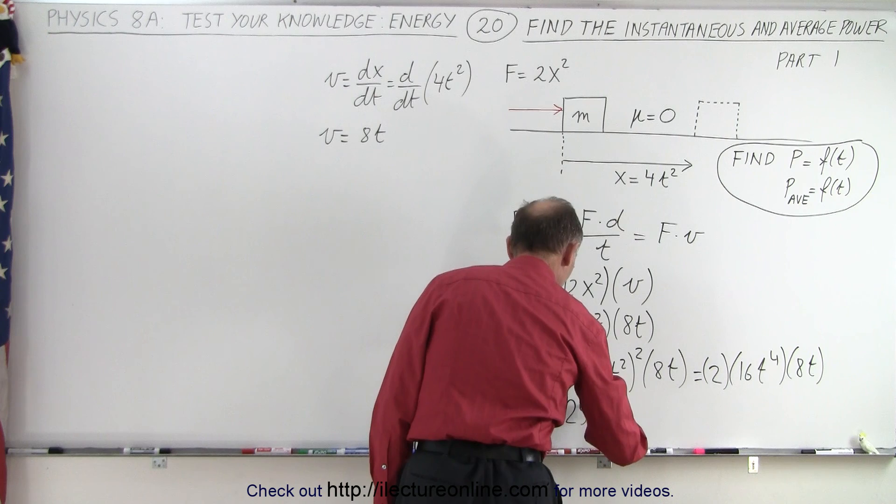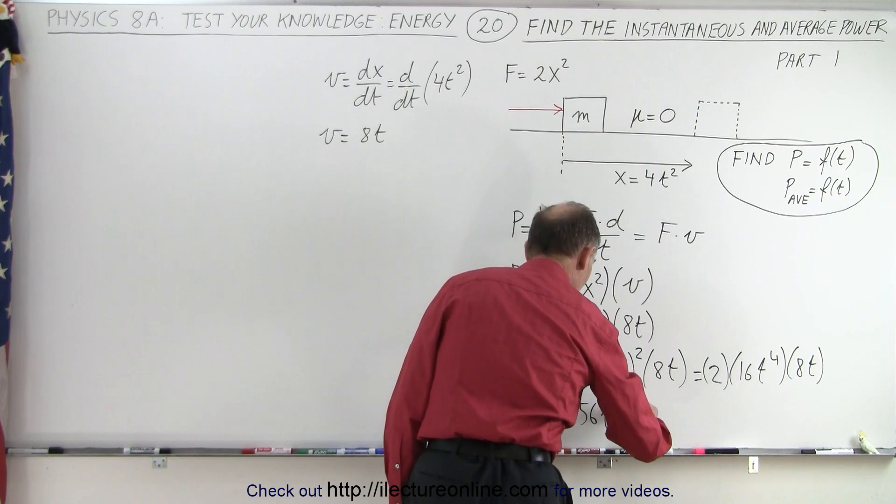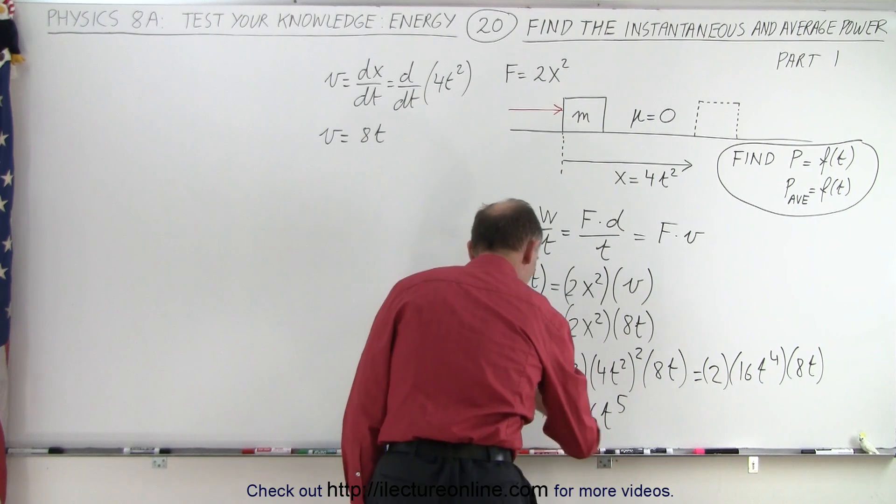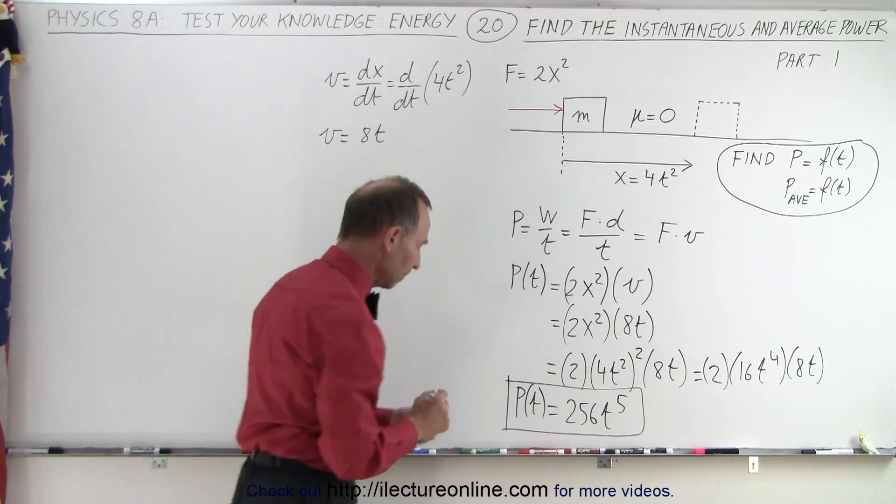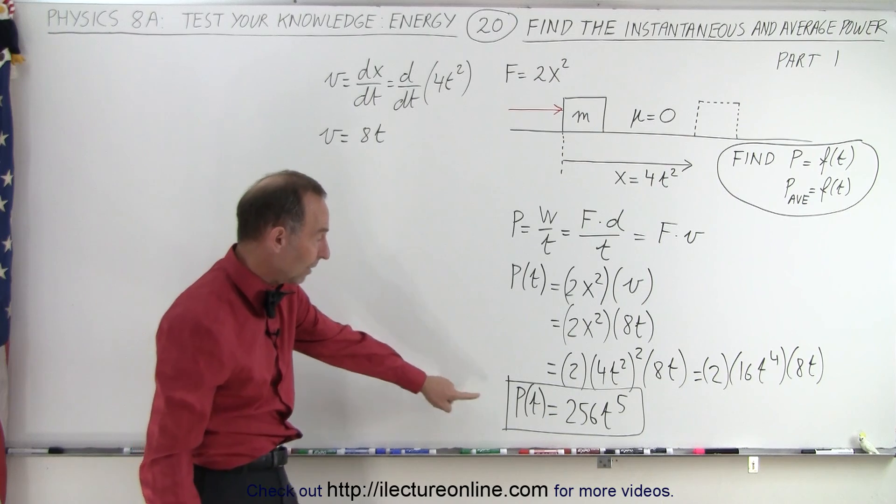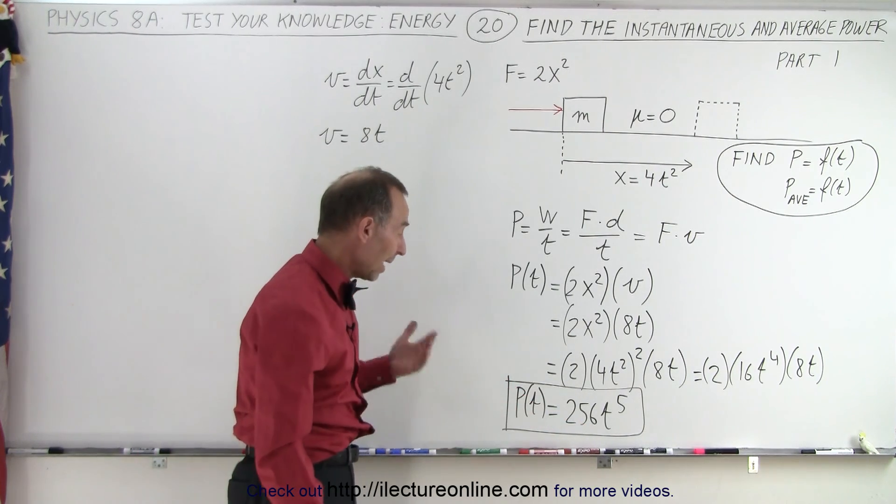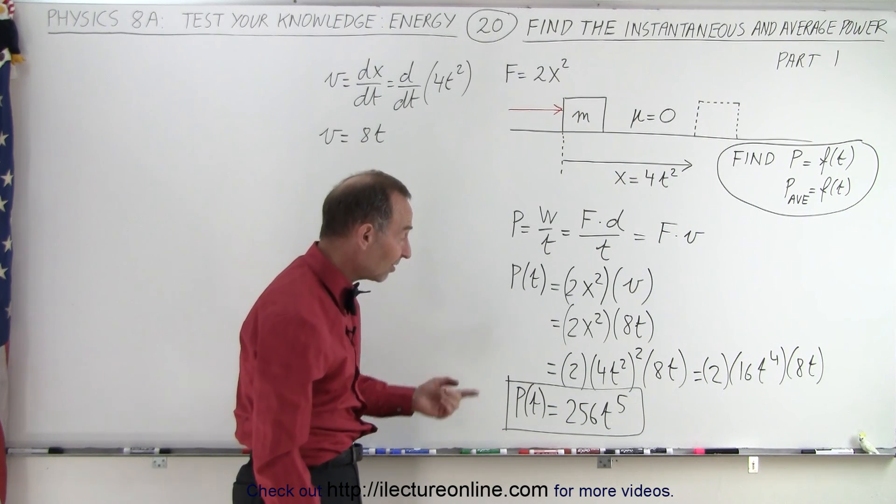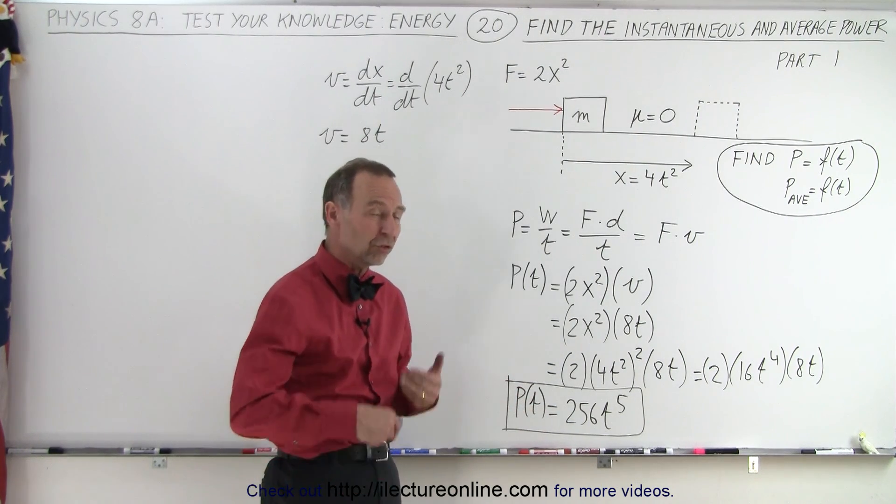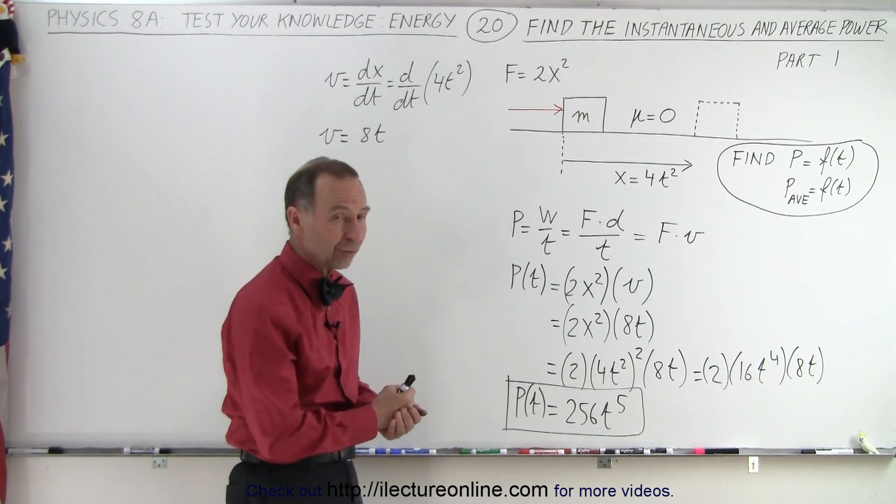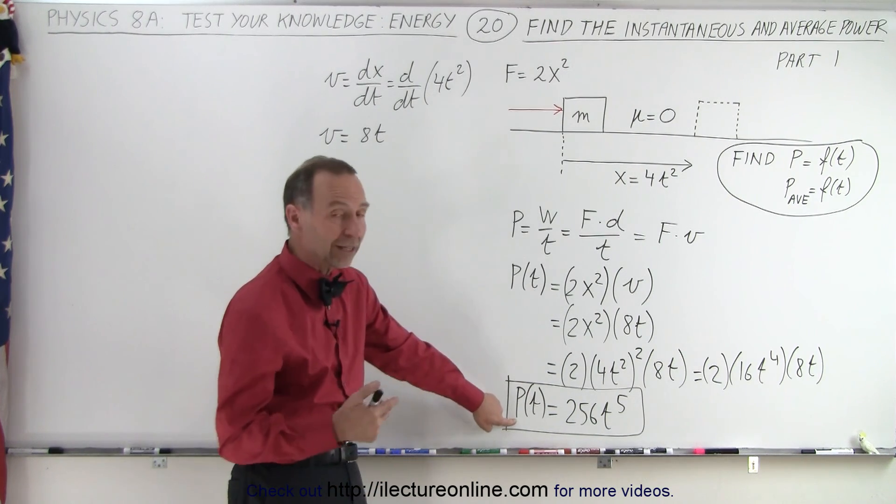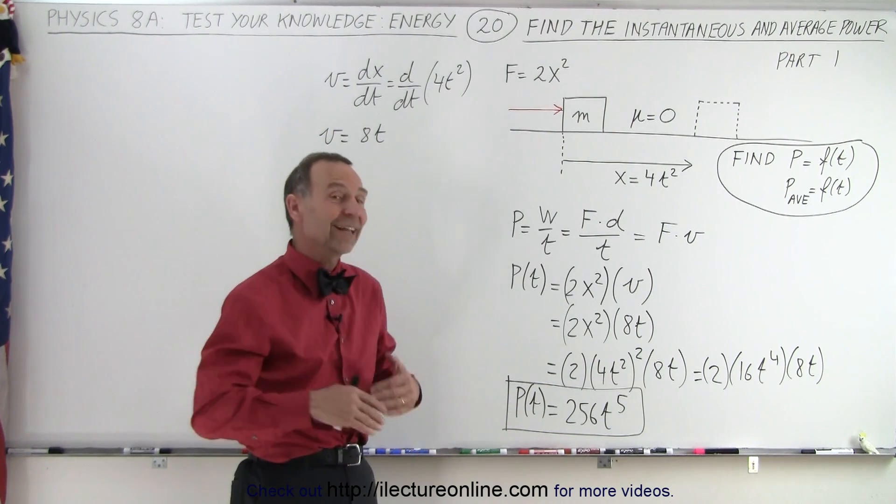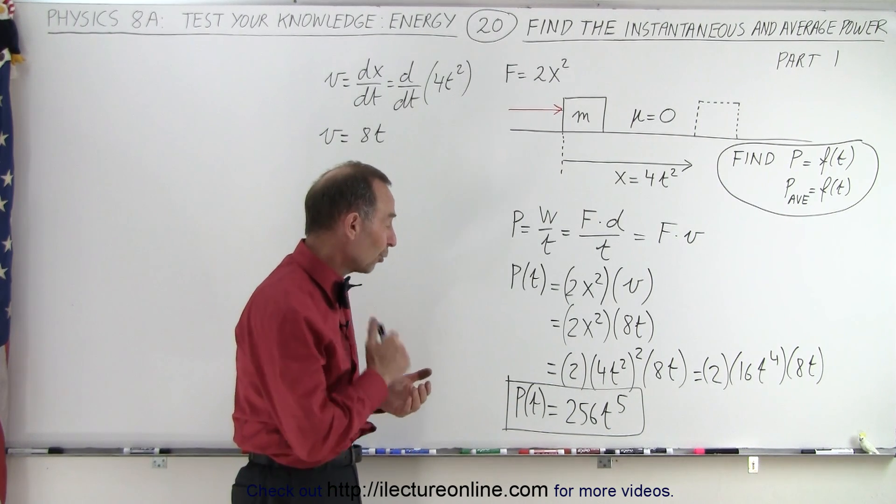So this can be written as 256 times t to the fifth power. And that is indeed the instantaneous power as a function of time. So notice that the instantaneous power at time equals 0 is 0. At time equals 1 is 256. At time equals 2 is 256 times 2 to the fifth power, which is 32 times 256. In other words, the instantaneous power at 2 seconds is 32 times bigger than the instantaneous power after 1 second.